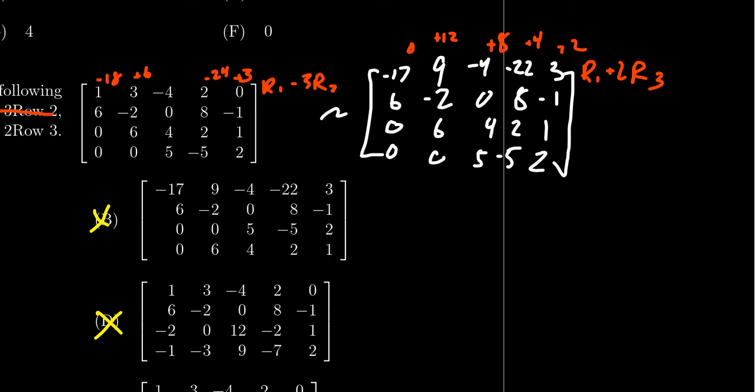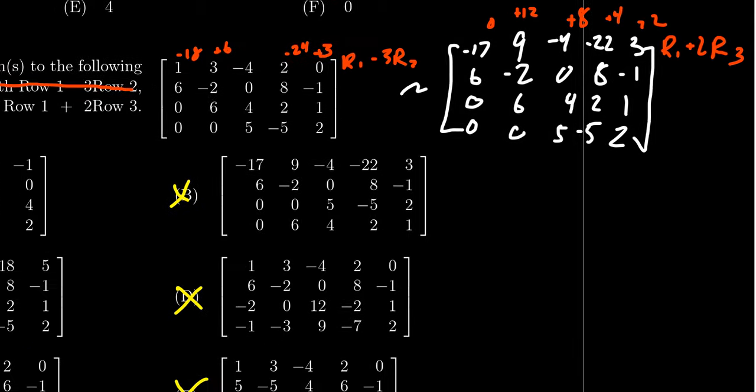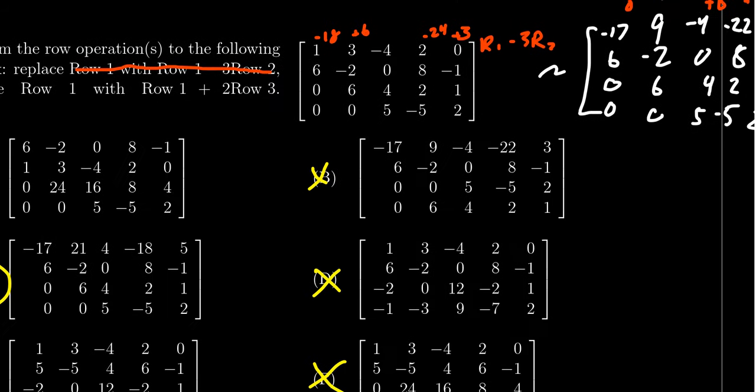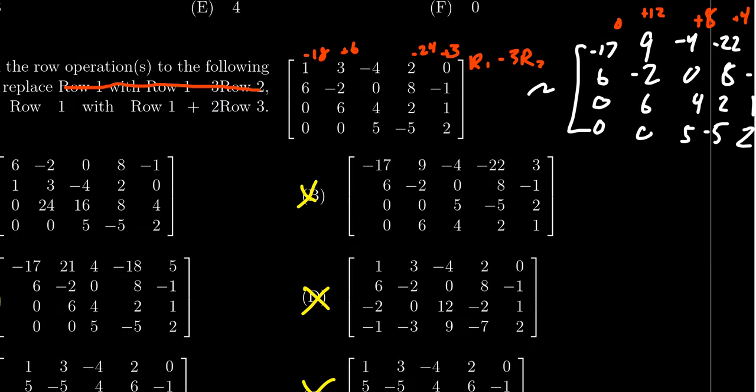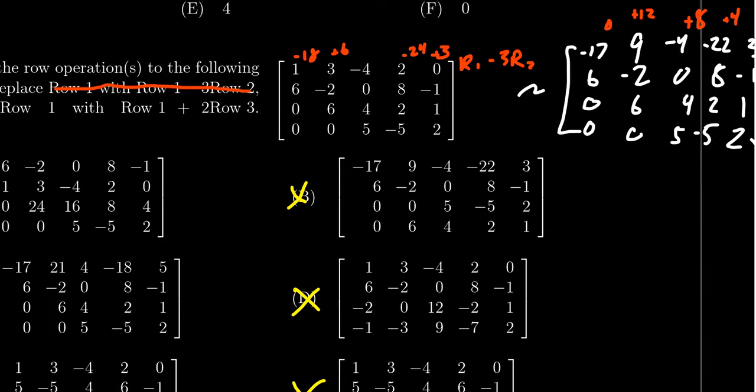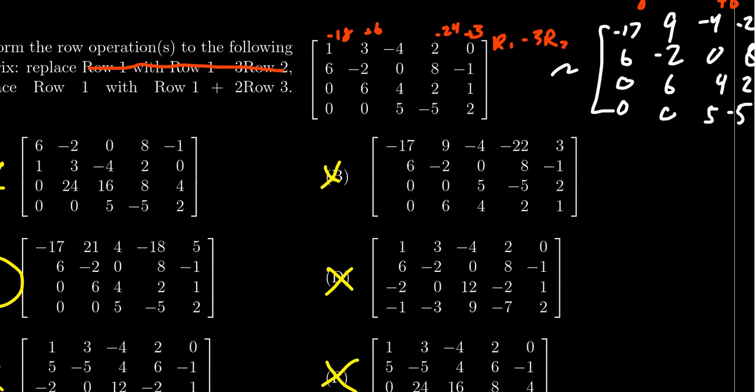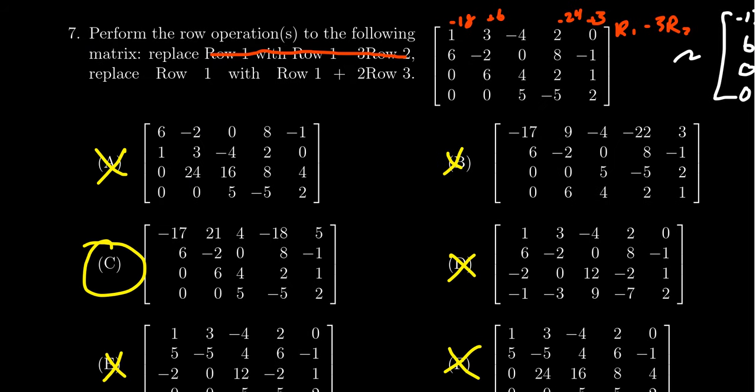So notice that negative 17 plus 0 is negative 17, just like in option C there. We're going to get 12 plus 9, which is 21. We're going to get 8 minus 4, which is 4. We're going to get negative 22 plus 4, which is negative 18. And then we get 3 plus 2, which is 5. So this is correct. If we did follow through with the arithmetic, this would be correct.